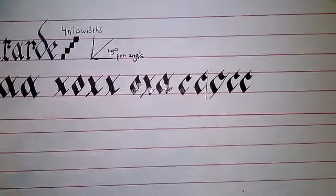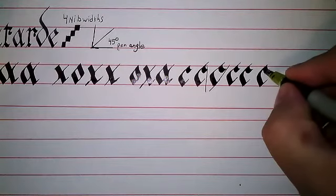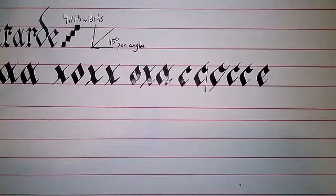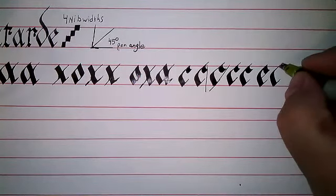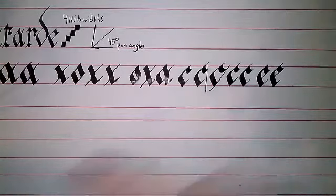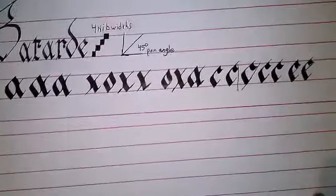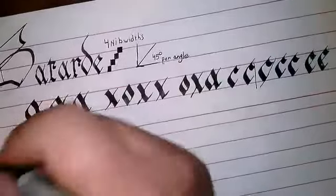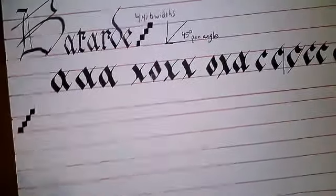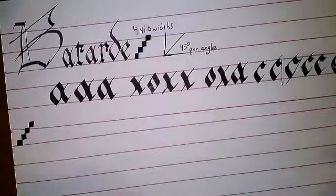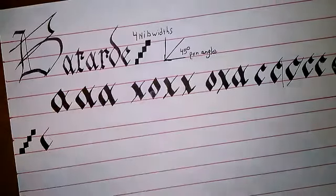So we have a C. E is essentially just a C with another line on it — you do that and then bring it in. Straight curve and you have your E.